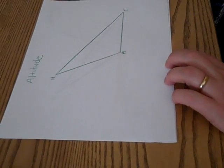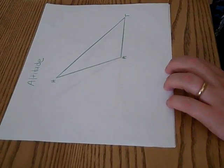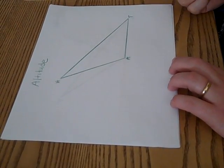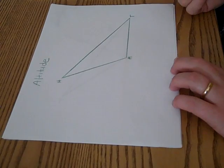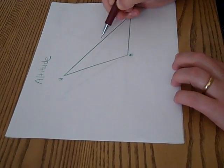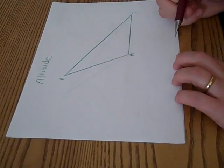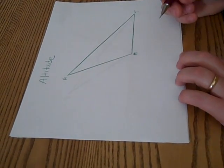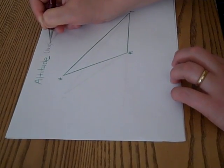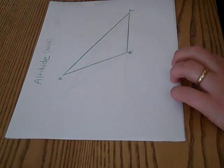Today we're going to construct the altitude of a triangle. Here I have obtuse triangle H-A-T. Remember, the altitude is the perpendicular distance from a vertex to the opposite segment or to the line containing the opposite segment. The altitude is really the height of our triangle.